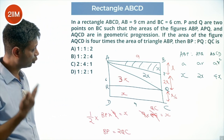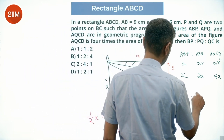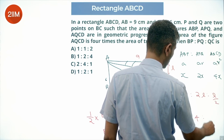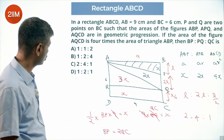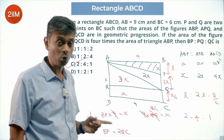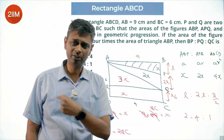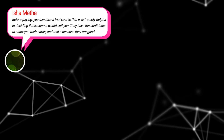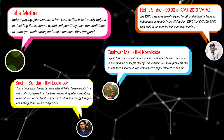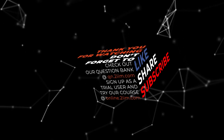Therefore, the ratio BP:PQ:QC equals L:2L:(L/2), which simplifies to 2:4:1. Alternatively, since the overall area is 7X and equals 54, we can find X and confirm the base lengths BP, PQ, and QC.